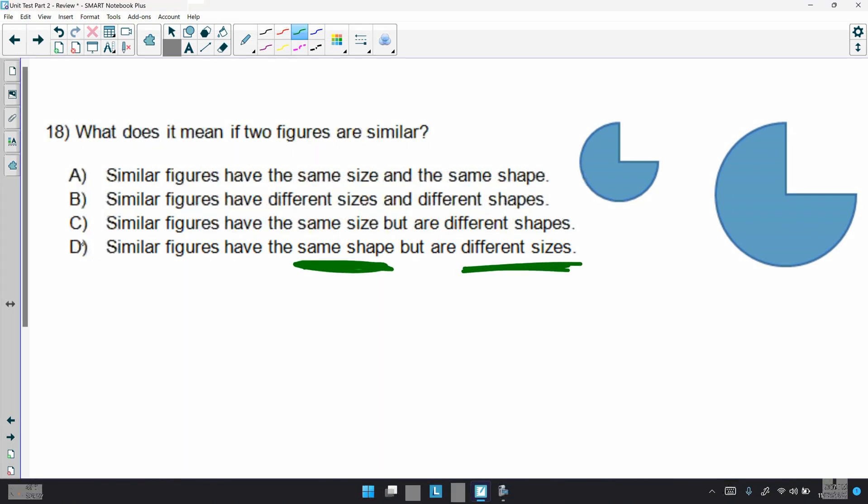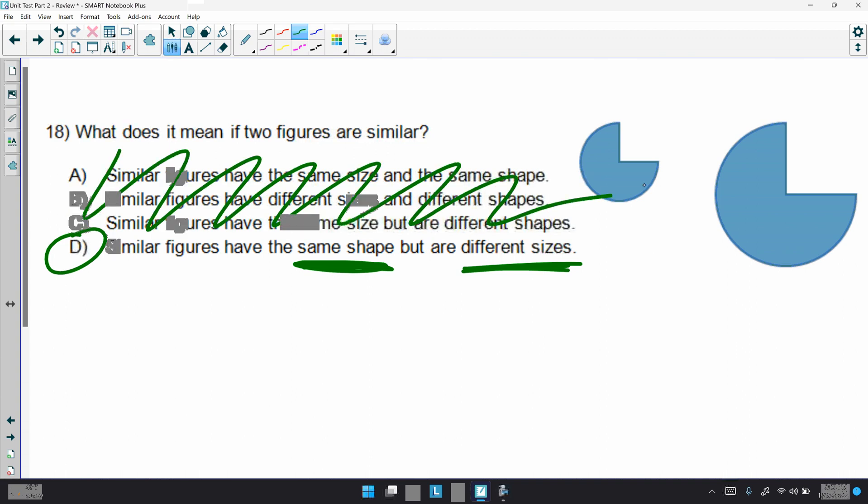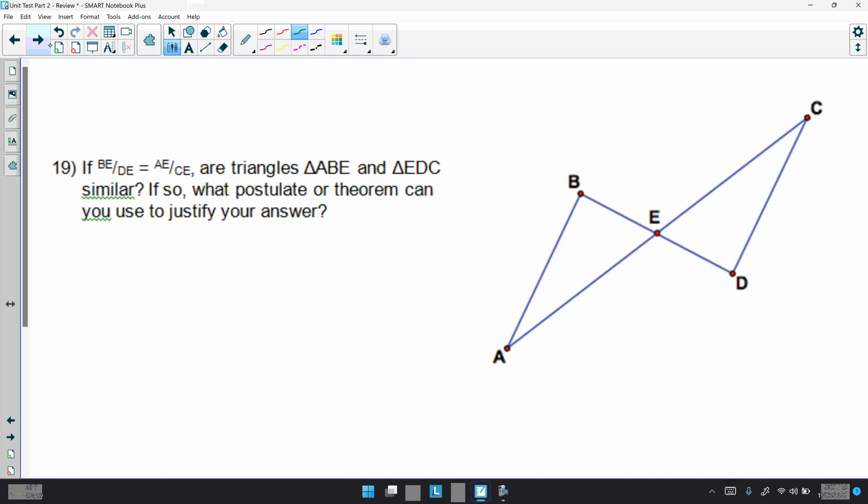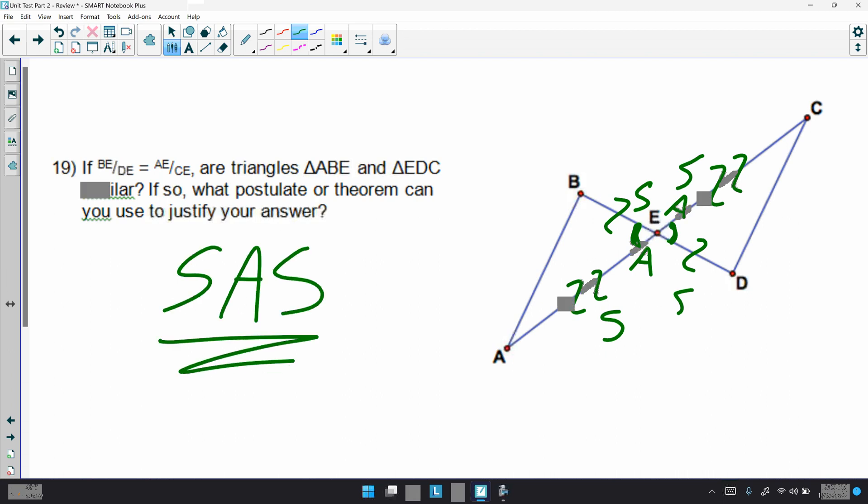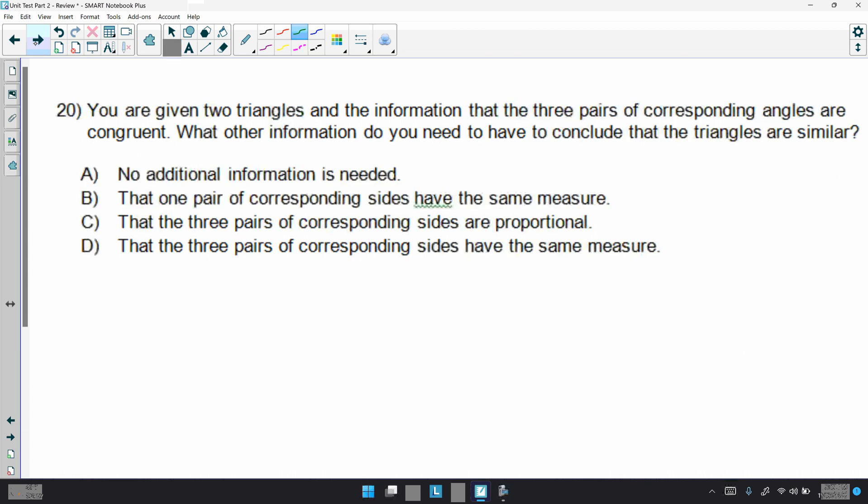19. If BE is proportional to DE, and AE is proportional to CE. Well, we have the same ratios. Are triangles ABE and EDC similar? If so, what postulate or theorem can you use to justify your answer? Well, remember, we have vertical angles right here. So, with that, we have a form of SAS. Side, angle, side.